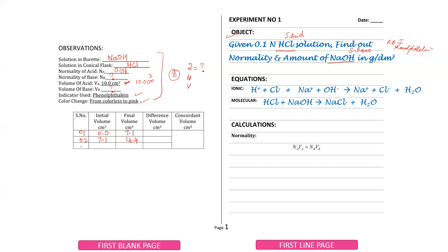Then you repeat the practical again for observation 3. The initial reading is 14.4, and you perform the titration until the end point. For example, the end point is 21.5 cm³. This is the observation table.